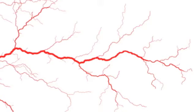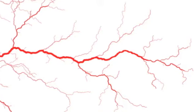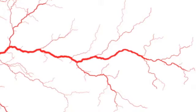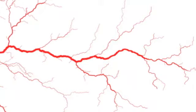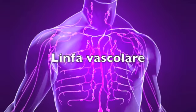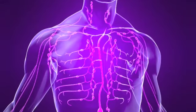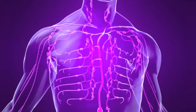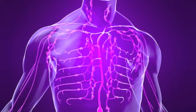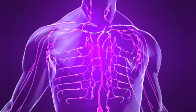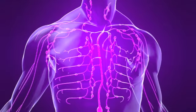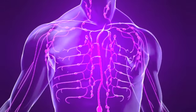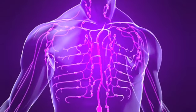The lymph is captured and channeled into very thin capillaries, which then become lymph ducts — and that's where the lymph is called vascular lymph. In simpler terms: lymph spread throughout the body between cells is interstitial lymph; once it enters the capillaries and larger ducts, it becomes vascular lymph.